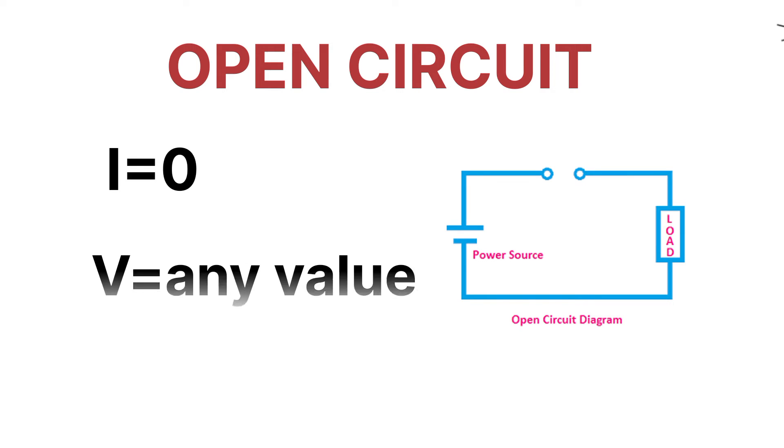The definition of open circuit: whenever the current becomes zero through a path and voltage may have some value, then it will be called an open circuit. That means inside the open circuit, the current is always zero and there is some value of voltage.